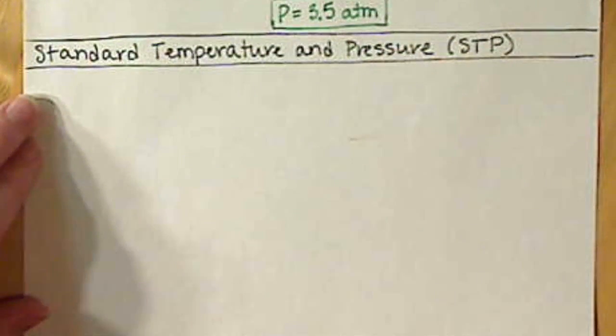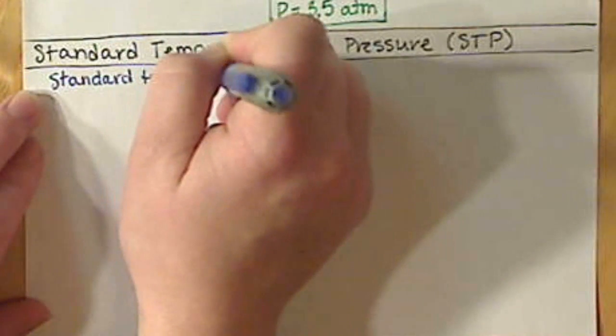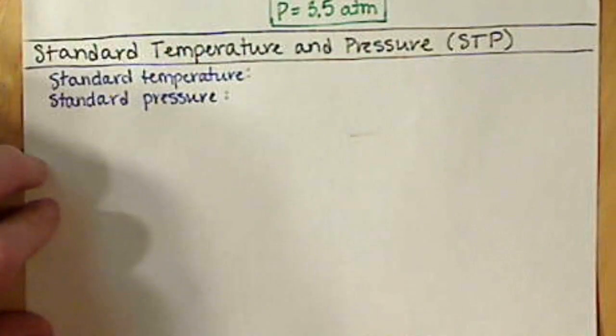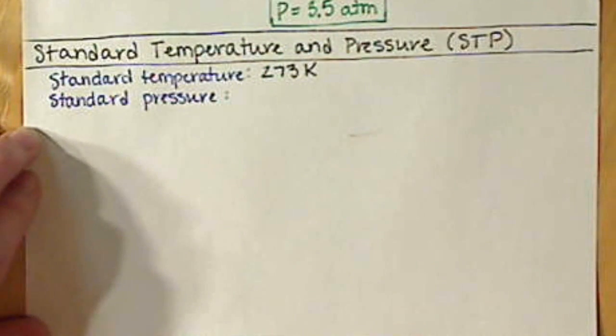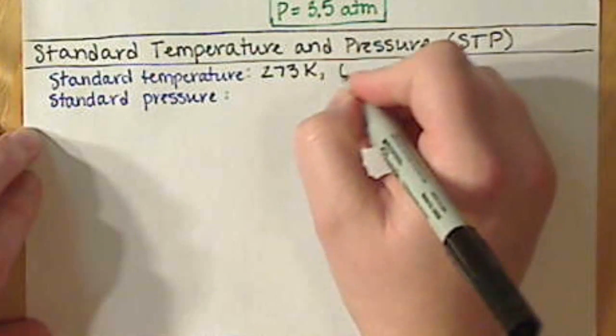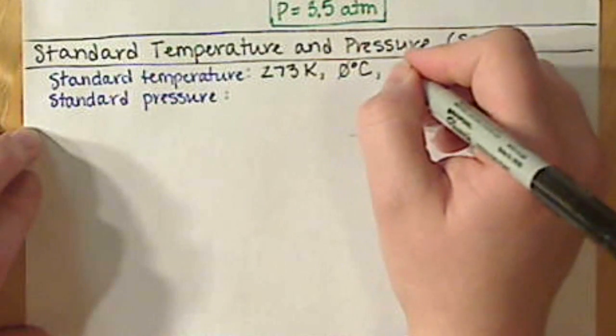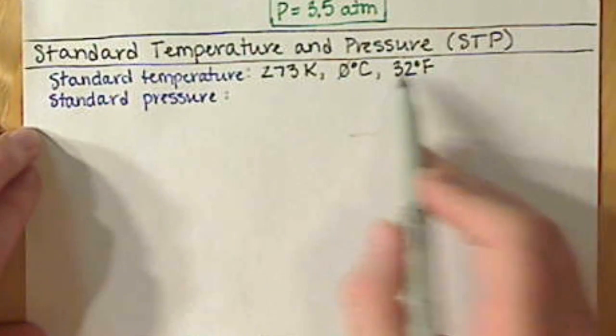So what are those values? Our standard temperature is going to be at 273 Kelvin, otherwise known as zero degrees Celsius or 32 degrees Fahrenheit, depending on what units the question gives you.